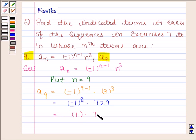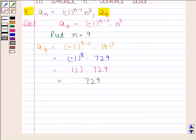So we have 1 * 729, and 1 * 729 = 729. Hence a_9 = 729.